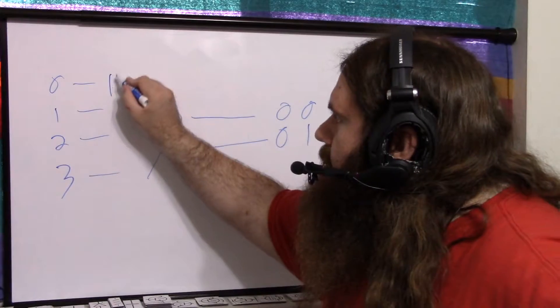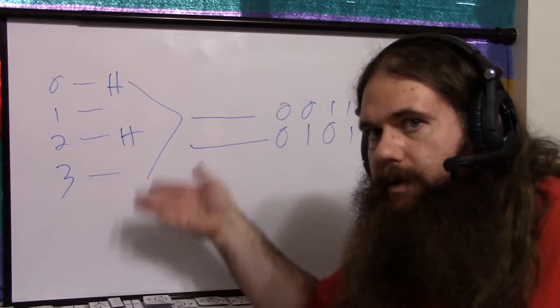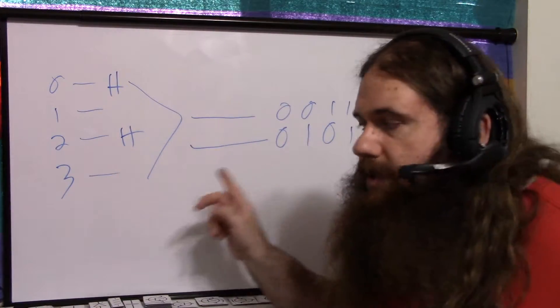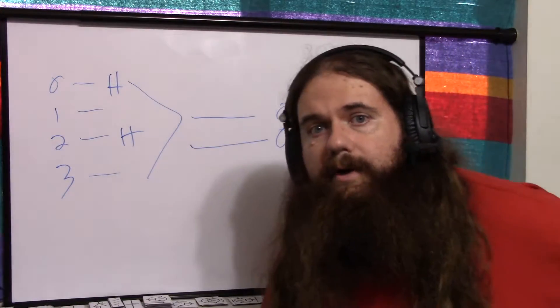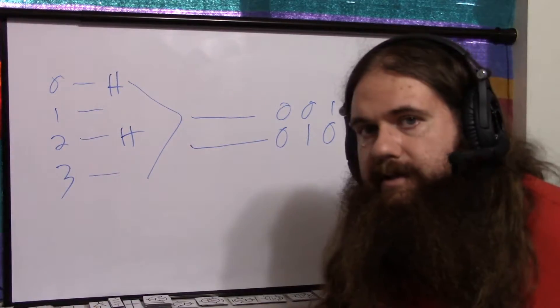But what if two of them are high at the same time? Which one takes precedence? And what if none of them are high? What value do you get then? The only time this output is valid is when one and only one is on. Enter the priority encoder. In other words, each of these devices has a priority.